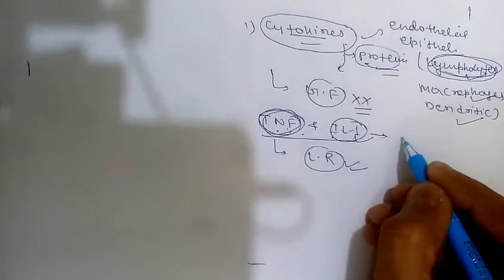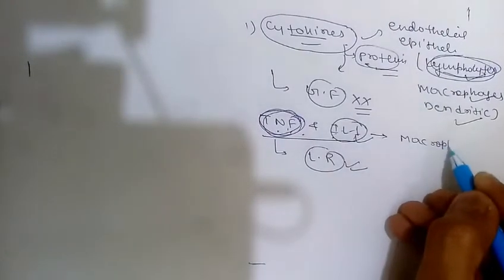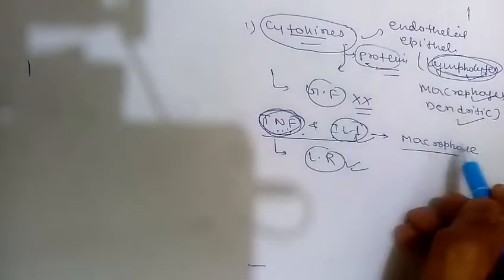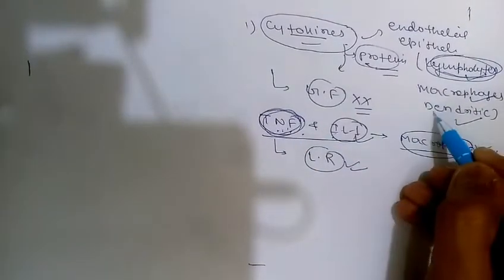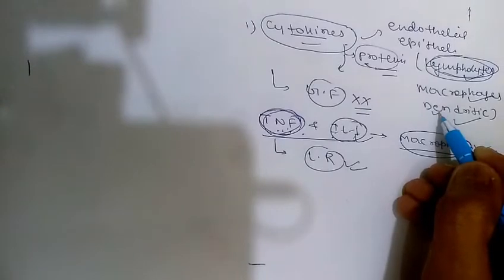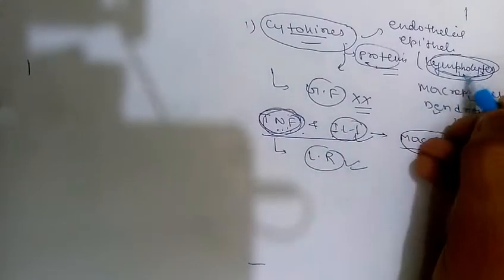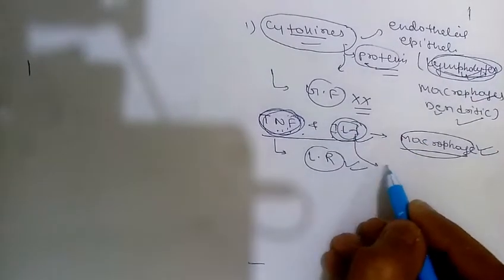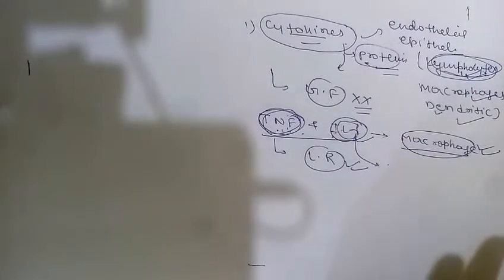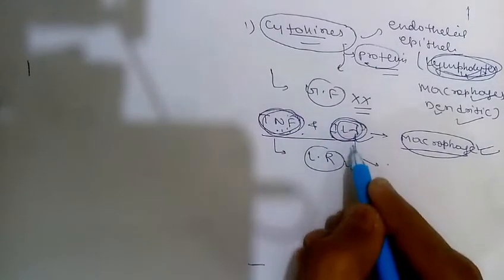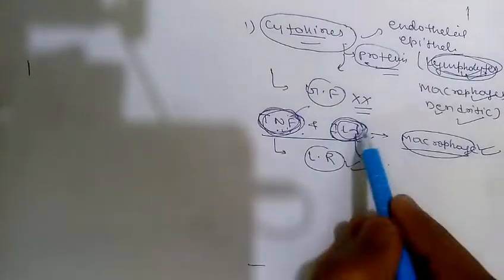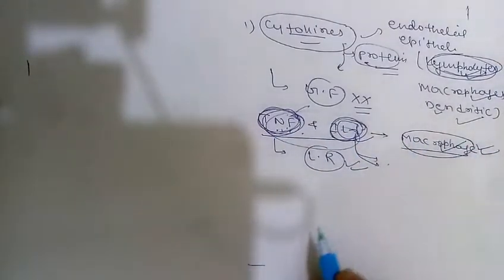TNF and IL-1 are produced mainly by activated macrophages and dendritic cells. TNF is also produced by T lymphocytes and muscle cells, whereas IL-1 is also synthesized by some epithelial cells.